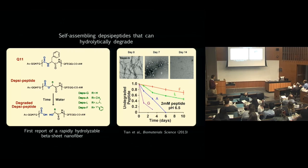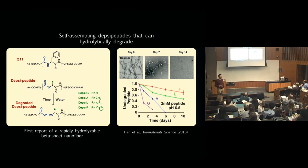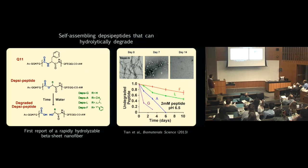We used that as inspiration to change the side chain near the ester bond. As you increase the hydrophobicity from glycine, to alanine, to leucine, to phenylalanine, we can dial up the length of time before the peptides degrade. This was gratifying because we had engineering control over it, and because amyloid beta-sheet fibers are extraordinarily stable and don't normally degrade. Having one that dissolves in two weeks had never been done with a beta-sheet fiber before.